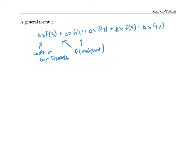So if we have n rectangles instead of 5, our area given by the midpoint rule will be delta x times f of m1, where m1 is the first midpoint of the first little rectangle, plus delta x f of the second midpoint, and so on, all the way through delta x f of mn. This can be written in summation notation as the sum from i equals 1 to n of delta x times f of m i.